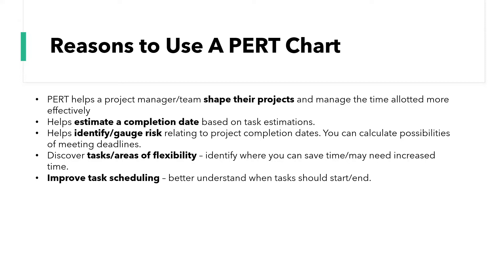So why would you want to use a PERT chart? They help a project manager or team shape their projects and make best use of the time allotted. They help to estimate a completion date of either tasks or a whole project. They can help identify and gauge risks relating to the entire project or particular tasks, and they enable you to calculate possibilities of meeting deadlines — which is a key benefit for stakeholders. You can also see tasks where there's flexibility, spot bottlenecks, and identify tasks taking longer than normal. They're great for scheduling tasks in general, knowing when to start or end a task, and seeing dependencies between tasks.